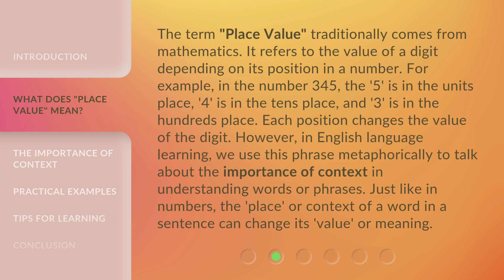The term 'place value' traditionally comes from mathematics. It refers to the value of a digit depending on its position in a number. For example, in the number 345, the 5 is in the units place, 4 is in the tens place, and 3 is in the hundreds place. Each position changes the value of the digit.